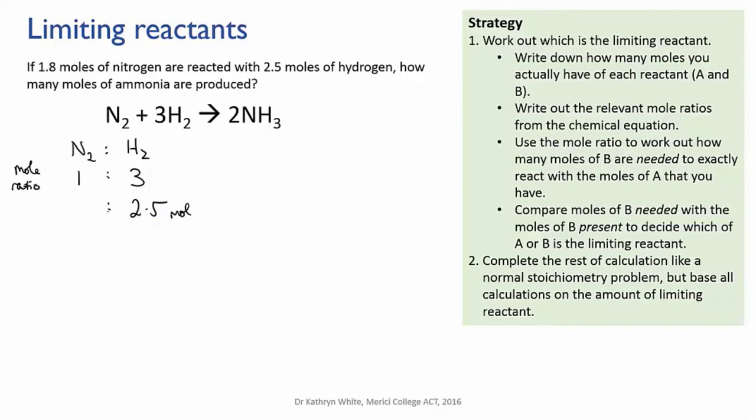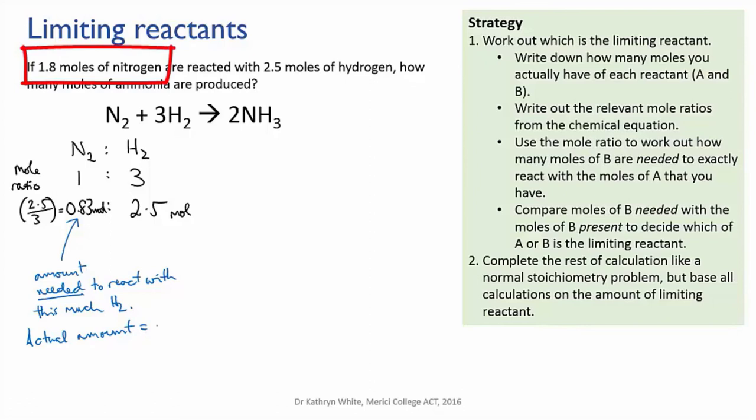Now, the mole ratio is 3 hydrogens to 1 nitrogen. So to work out how much nitrogen is needed to fully react with that amount of hydrogen, I have to divide by 3. So that's 2.5 divided by 3, which equals 0.83 moles of nitrogen. So I need 0.83 moles of nitrogen to fully react with 2.5 moles of hydrogen. And you'll see that we have more than 0.83 moles of nitrogen present. In fact, we have 1.8 moles. So that means that all the hydrogen will react and there will still be some nitrogen left over afterwards.